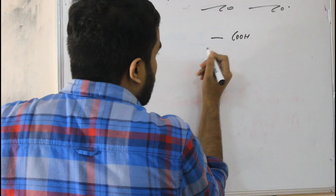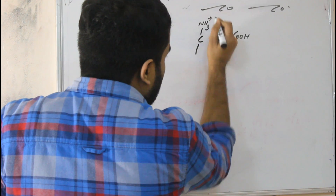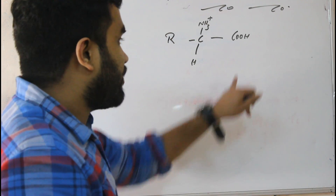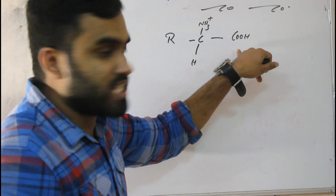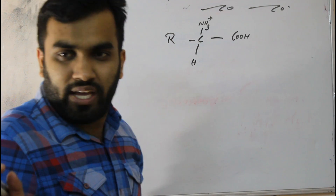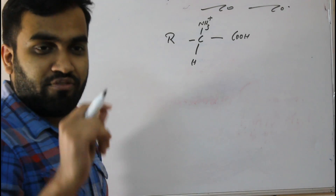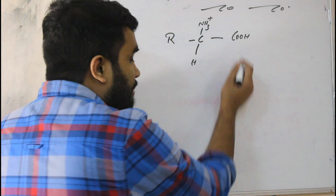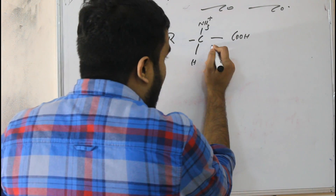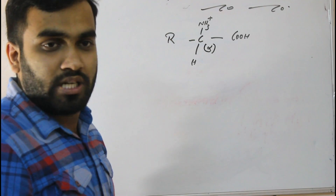In our classes you studied the structure of amino acid. This is a simple structure: you can see a functional group that is the carboxylic acid, the amino group, and an R group. This R group can be ethyl, methyl, or anything. The structures are most important for us. The carbon just adjacent to the carboxylic acid functional group we name as the alpha carbon.